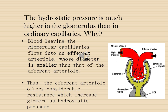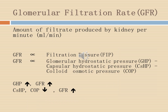The hydrostatic pressure is much higher in the glomerulus than in ordinary capillaries. This is because the size of the afferent arteriole is much smaller compared to the efferent arteriole. Blood leaves the glomerular capillaries and flows into the efferent arteriole, and because the efferent arteriole is much smaller, it offers considerable resistance which increases the glomerular hydrostatic pressure.